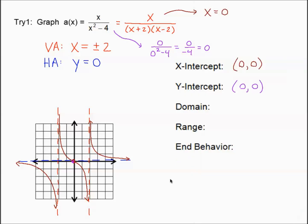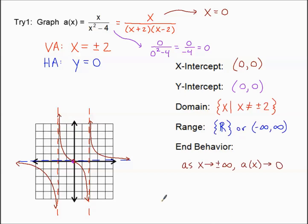You have a little bit more to do — find the domain, range, and end behavior, or pause one last time and I'll fill that in. Here is our final answer: domain in set notation, range in set notation and interval notation seen easily from the middle part of the graph. The range goes from negative infinity all the way through to positive infinity. End behavior: a(x) approaches zero on both ends. Thanks for watching, and I'll see you in class to practice more.